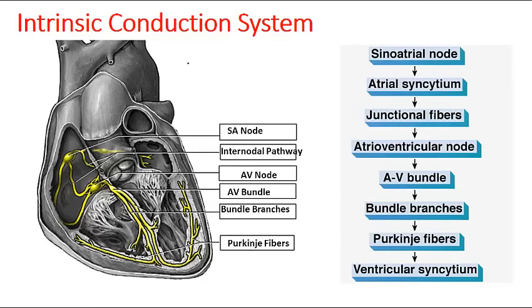The intrinsic conduction system overview: it is composed of different types of regions. First is the SA node — sinoatrial node — then internodal pathways, AV node — atrioventricular node — AV bundle — atrioventricular bundle — bundle branches, and Purkinje fibers. The whole process starts from the SA node and completely distributes until the Purkinje fibers.